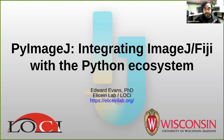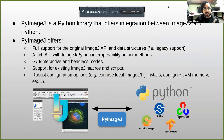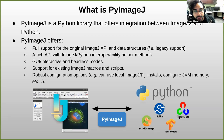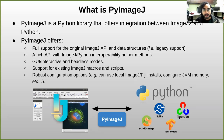PyImageJ is a library that offers integration between ImageJ2 and Python. What it's not is an entire rewrite of ImageJ in Python. In fact, when you run PyImageJ you start a special Java environment that's integrated with Python, and then you're running the same Java codebase that you would if you were to start Fiji locally from your desktop.